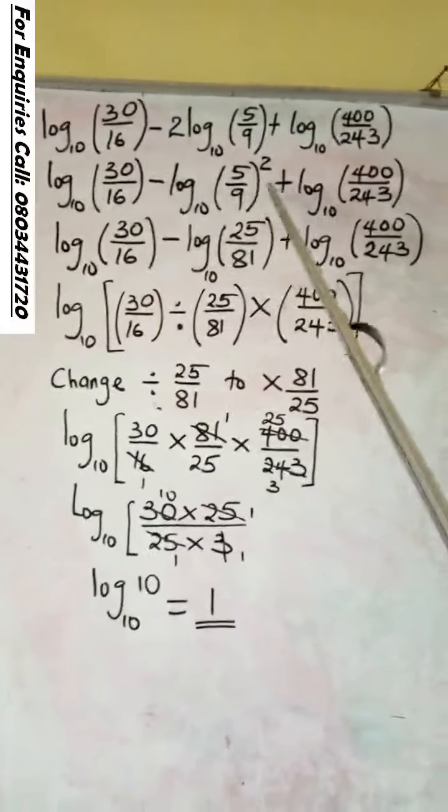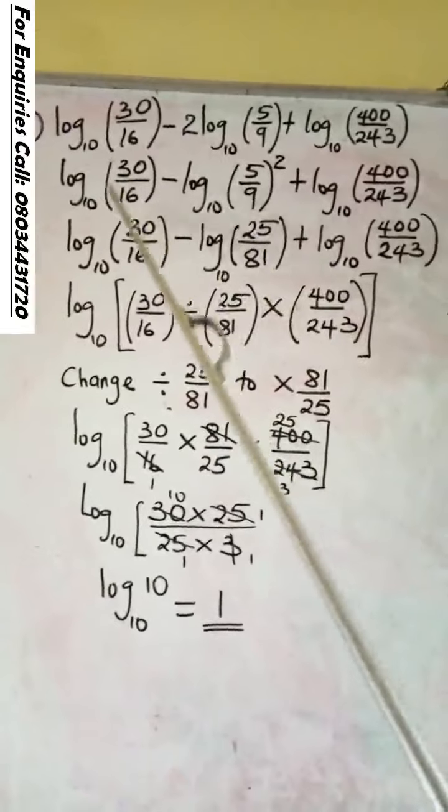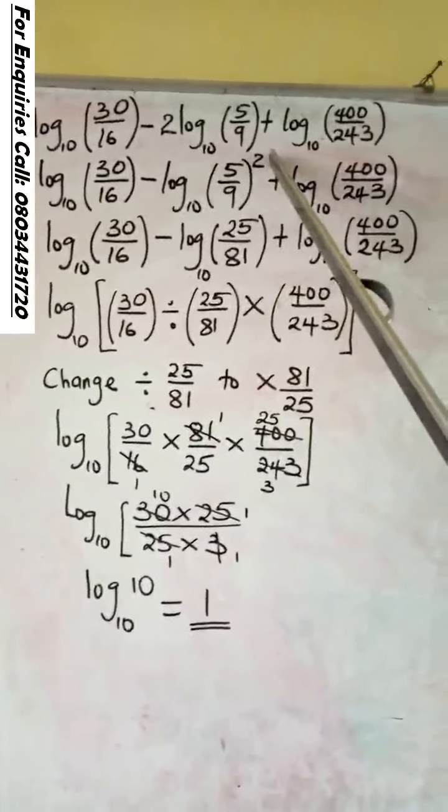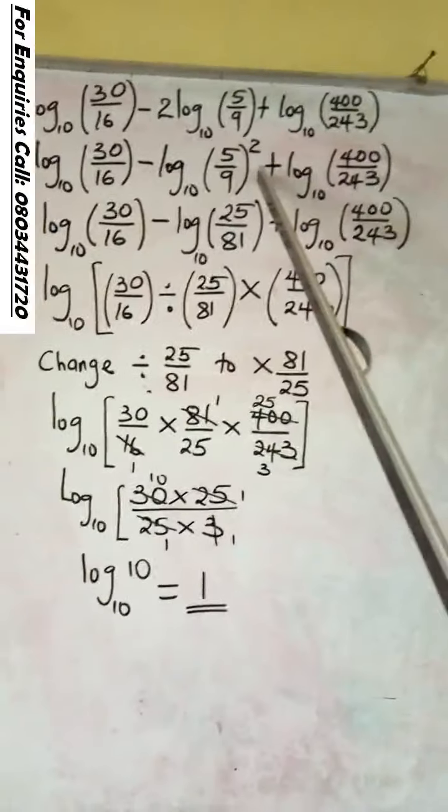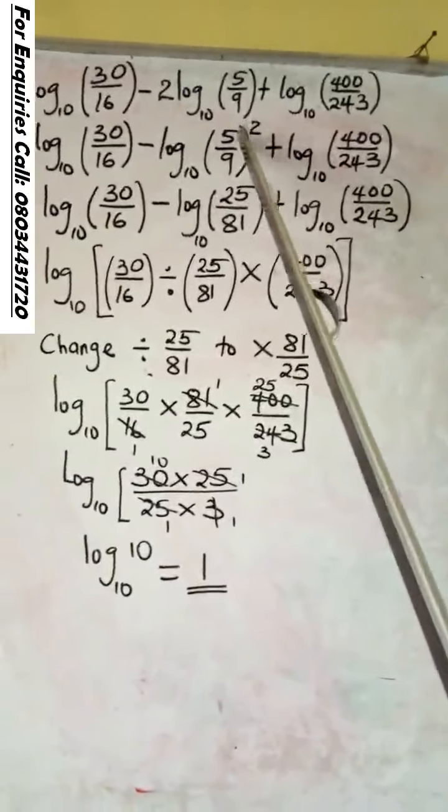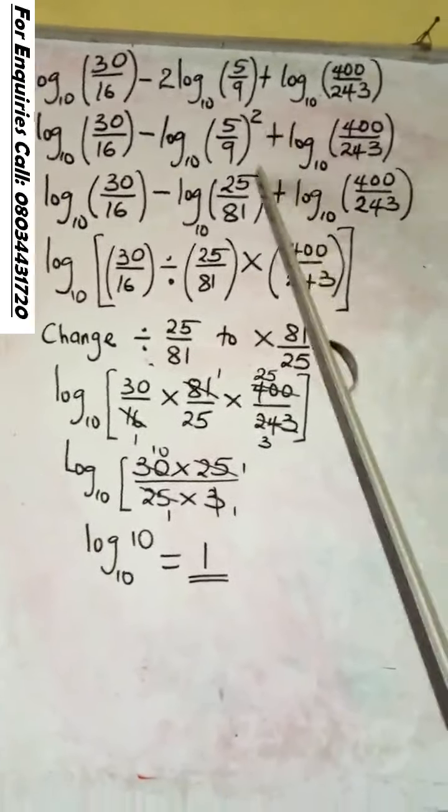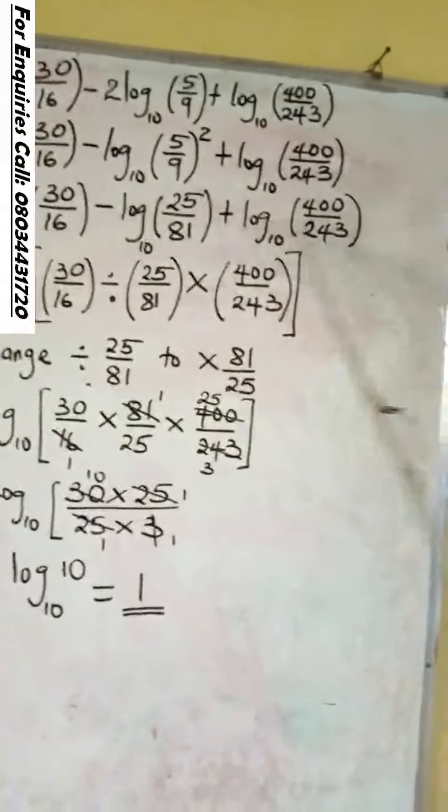Now, second step, you cannot solve when there is power. So clear the power before solving. So if I clear this power, I am going to have it here as 5 raised to the power 2, 25, 9 raised to the power 2, 81. There is no power in the values.